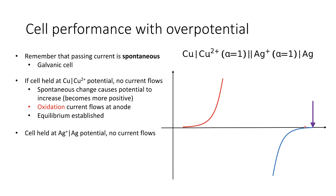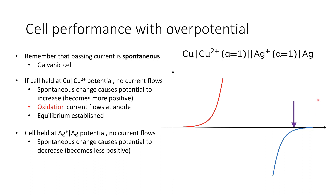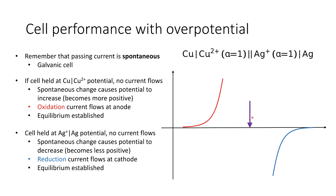Conversely, if we hold the cell at the silver equilibrium potential, again no current flows. But if we release that potential and allow the cell to drive current, spontaneous change will cause the potential overall to decrease and become less positive, allowing a reduction current to flow at the cathode and establishing that equilibrium.